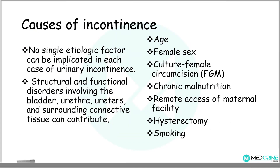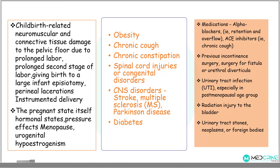What are the causes of incontinence? There is no single etiologic factor implicated in each case; urinary incontinence is a multifactorial problem. Structural and functional disorders involving the bladder, urethra, and surrounding connective tissues may contribute to its development. Contributing factors include: old age, female sex, cultural female genital mutilation, chronic malnutrition, remote access to maternal facilities, hysterectomy, smoking, childbirth-related neuromuscular and connective tissue damage to the pelvic floor from prolonged labor or prolonged second stage of labor, episiotomies or perineal lacerations, and instrumental deliveries.